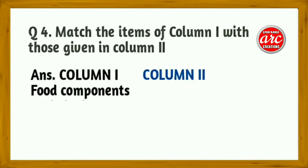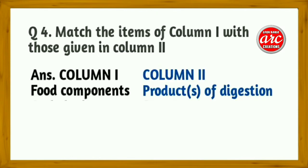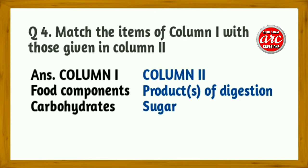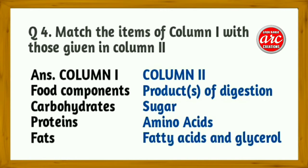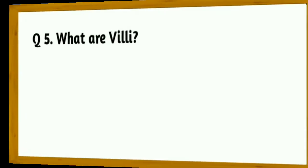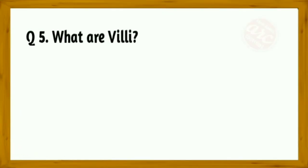Question 4: Match the items of Column 1 with those in Column 2. Food components and their products of digestion: carbohydrates → sugar; proteins → amino acids; fats → fatty acids and glycerol.